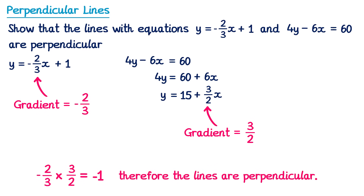So to show two lines are perpendicular, you want to find their gradients and show they multiply to give negative 1.